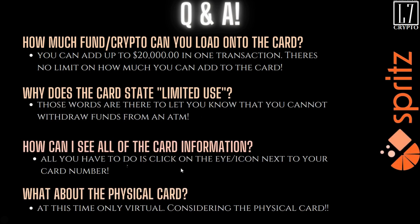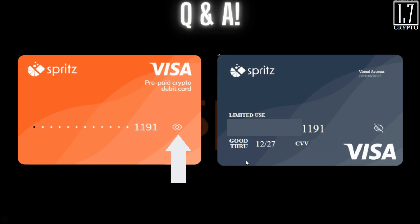How can you see all the card information? All you have to do is click on the eye icon next to your card number. When you go into the app and click it, it'll flip over and you can see your full card number, your issue date, and your CVV number.